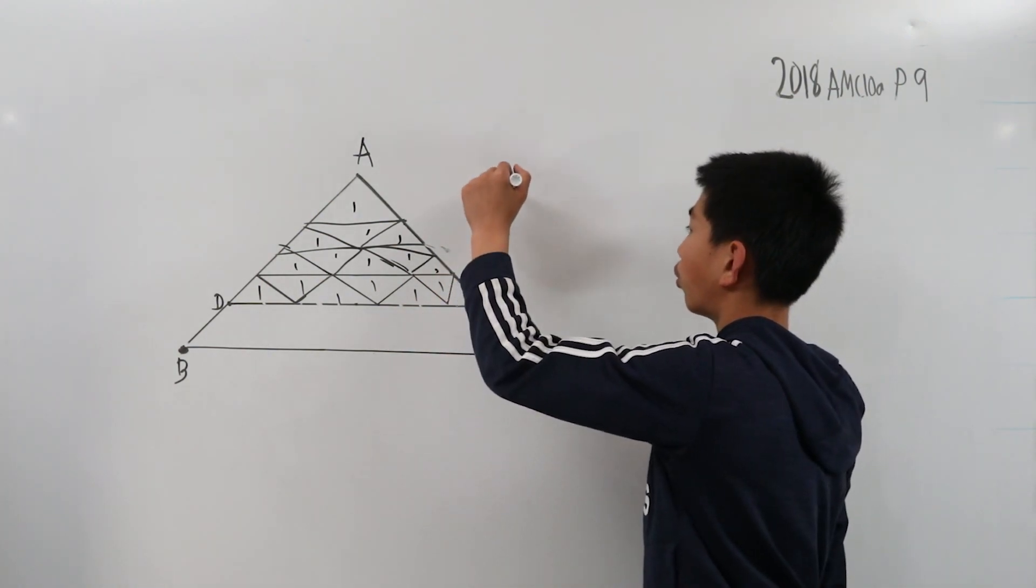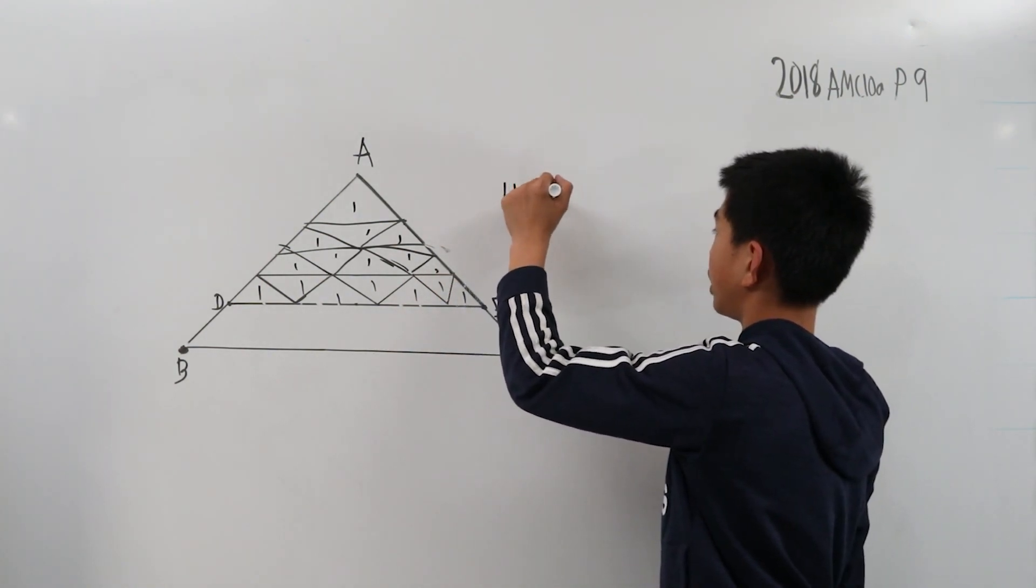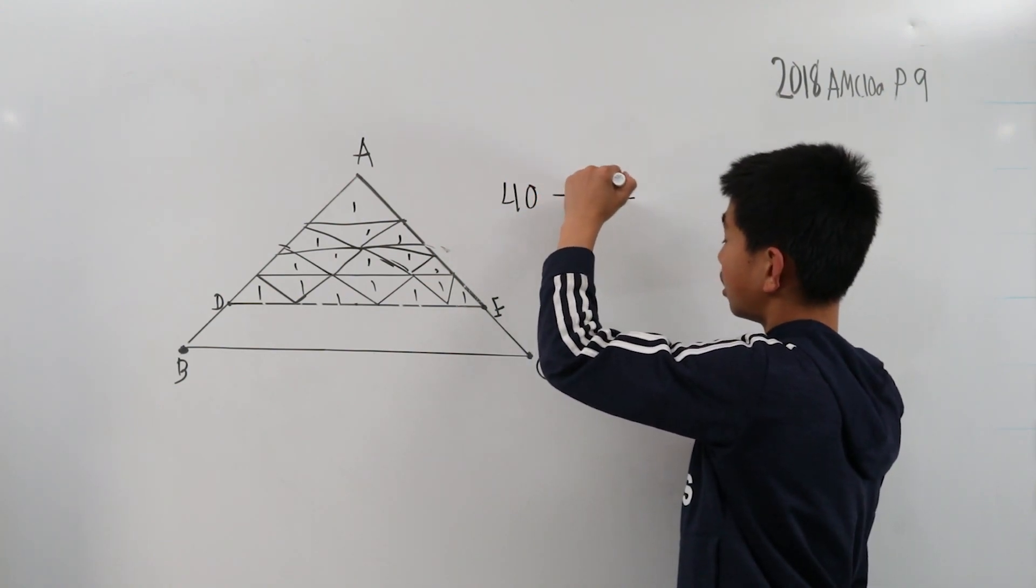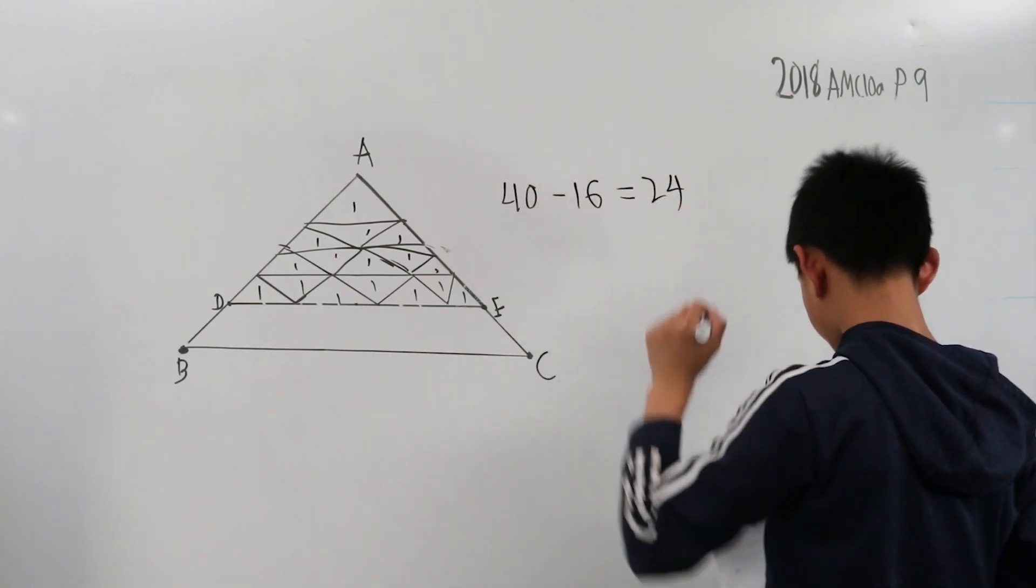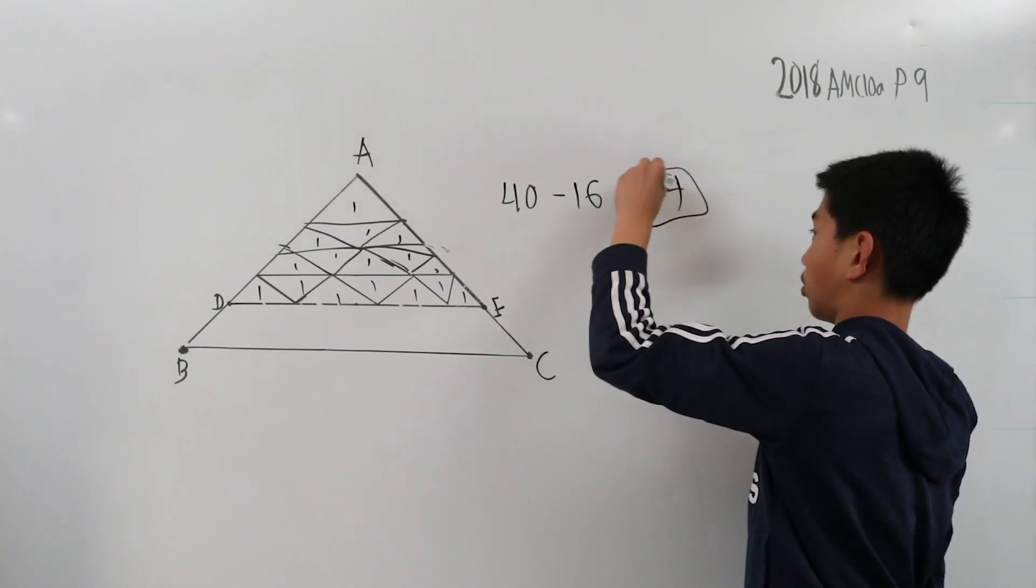Since we were given that the area was 40, we do 40 minus 16 is 24. So this remaining area is 24.